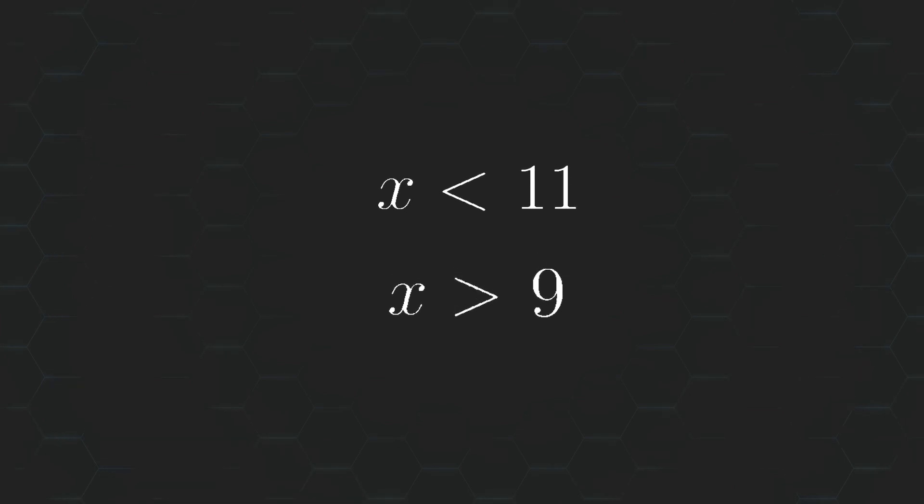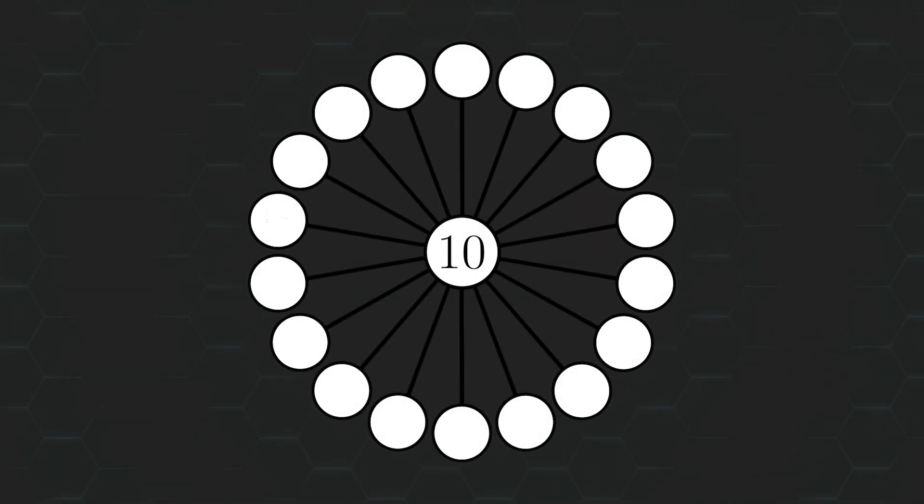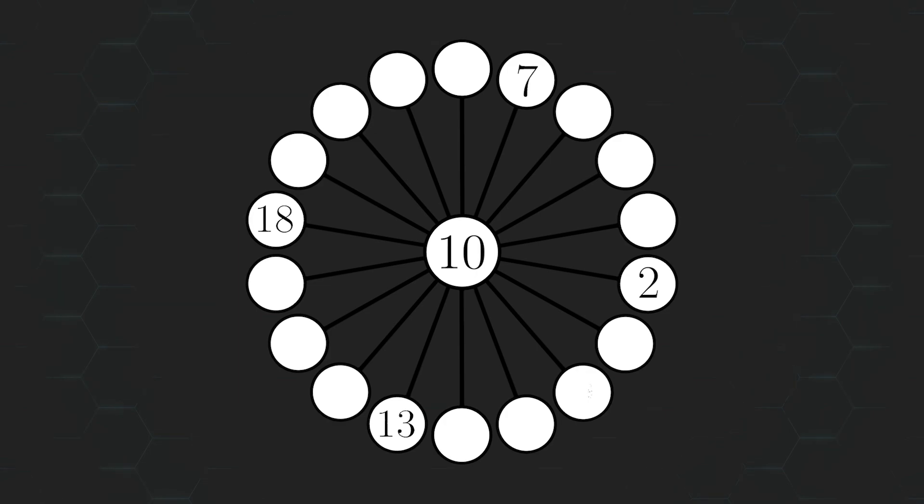Putting these two conditions together, we can see that the central circle can only take on one number, that being 10. And there we have it! From here, we can easily fill up the remaining circles and solve the puzzle without any dead ends.